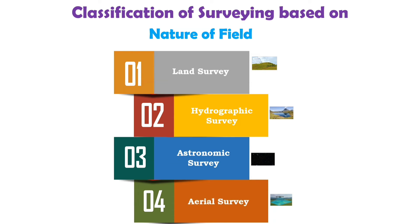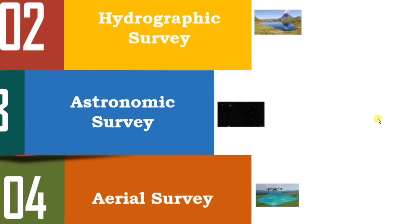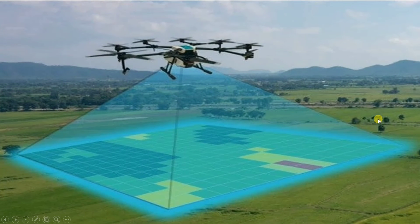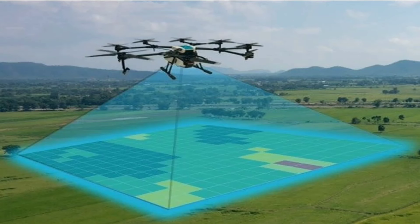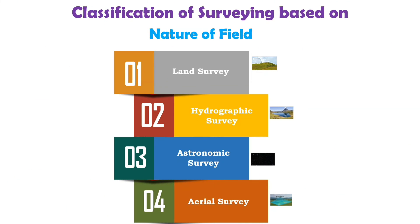The fourth type based on nature of field is aerial survey. Aerial survey is conducted from an aircraft; an aerial camera or other technology is used to determine different features on the earth's surface. This completes the classification of survey based on the nature of field.